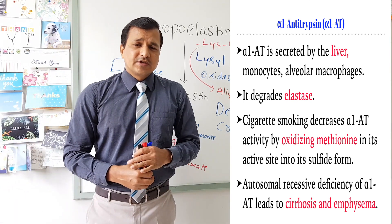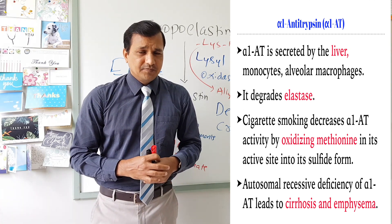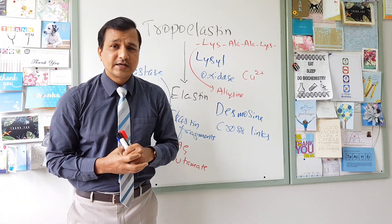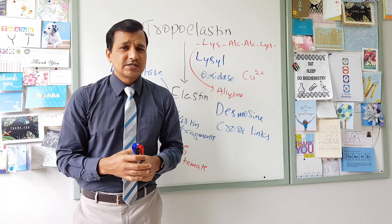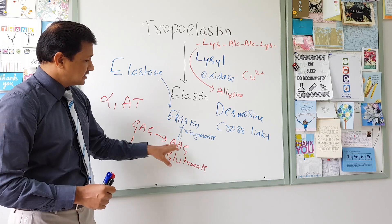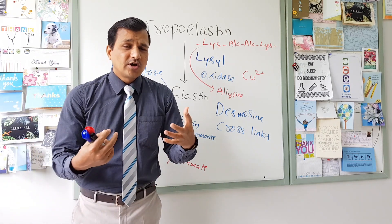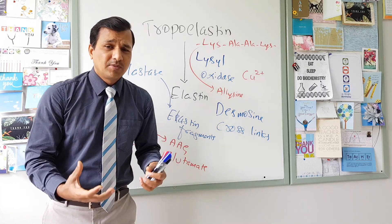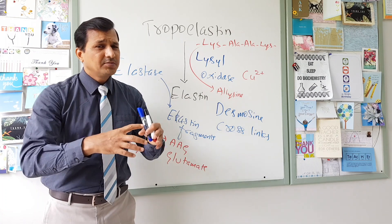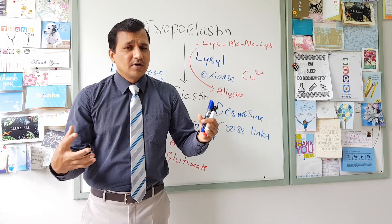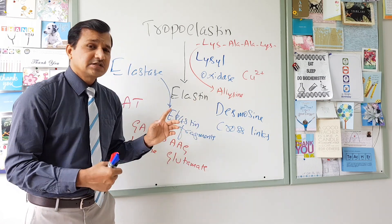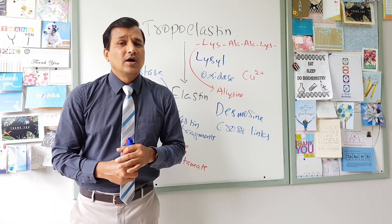A disorder associated with this is called alpha-1 antitrypsin deficiency. It is an autosomal recessive condition due to mutation in the gene coding for alpha-1 antitrypsin. Because of the GAG-to-AAG mutation, alpha-1 antitrypsin is not secreted into the blood — it accumulates as abnormal protein in the endoplasmic reticulum of hepatocytes, causing the ER to become enlarged or engorged. This can give rise to fibrosis of the liver, known as cirrhosis, and later liver failure.